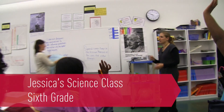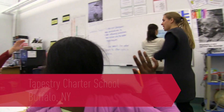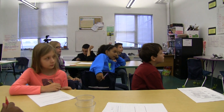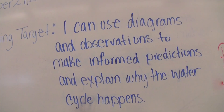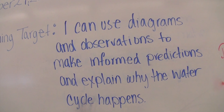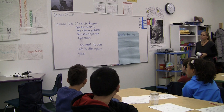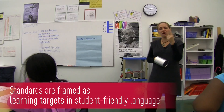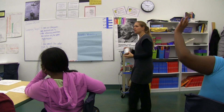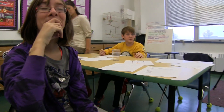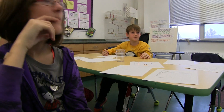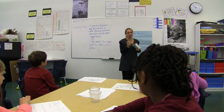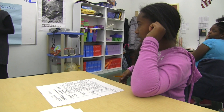The teacher asks Zach to read the learning target aloud. There are two goals for today: one is to explain why the water cycle happens, and the other, as Dominique answers, is to make informed predictions.